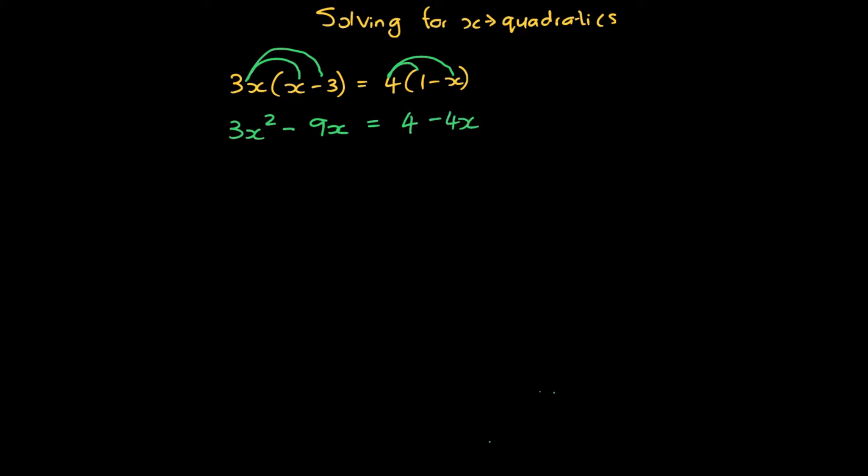We're then going to take all the terms over to one side in order to make things easier. So we've got 3x squared minus 9x plus 4x minus 4 equals 0.